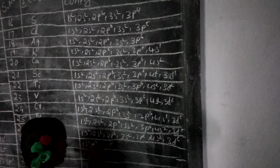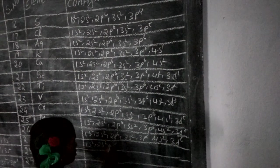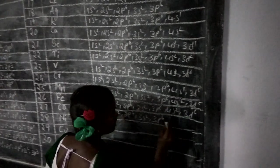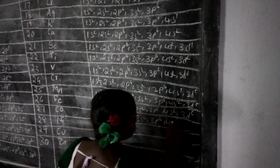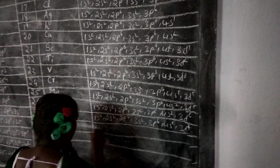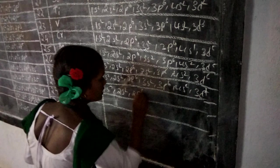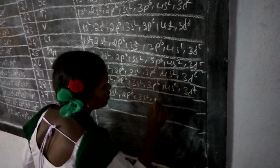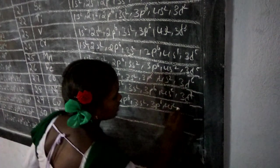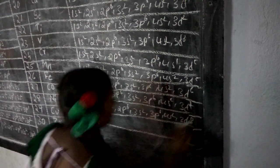1s2, 2s2, 2p6, 3s2, 3p6, 4s2, 3d7. 1s2, 2s2, 2p6, 3s2, 3p6, 4s2, 3d8.